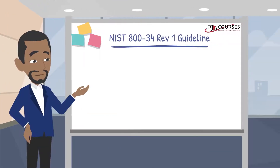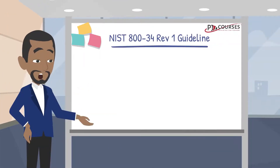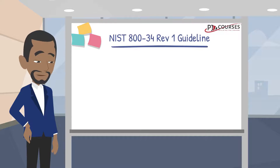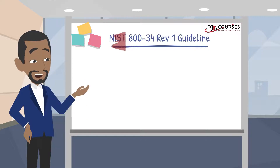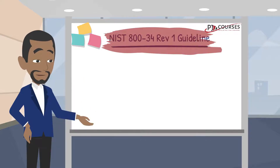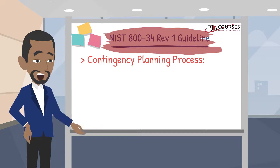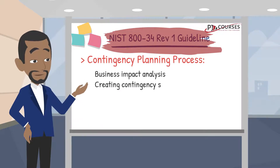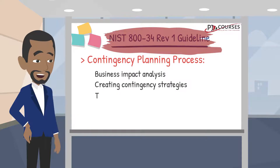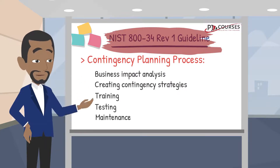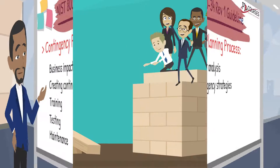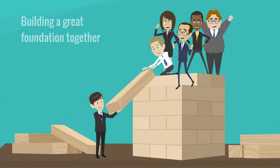This contingency plan training aligns with the guidelines listed in the NIST contingency planning guide for federal information systems, also known as NIST 834. This guidance details the contingency planning process, including how to conduct a business impact analysis, how to create contingency strategies, and how to train, test, and maintain your organization's contingency plan. The contingency plan coordinator should maintain and update the process on an annual basis.